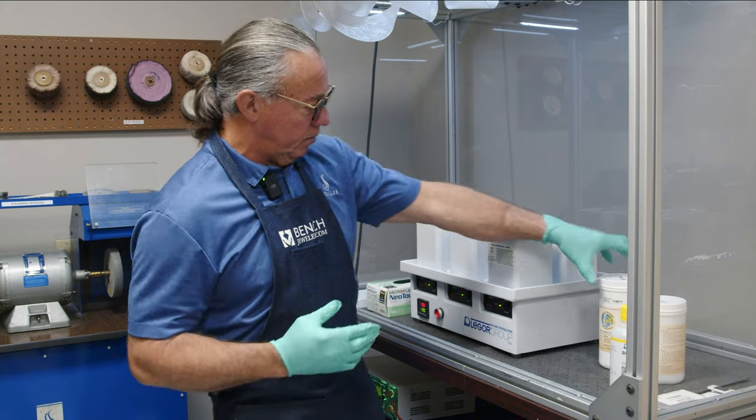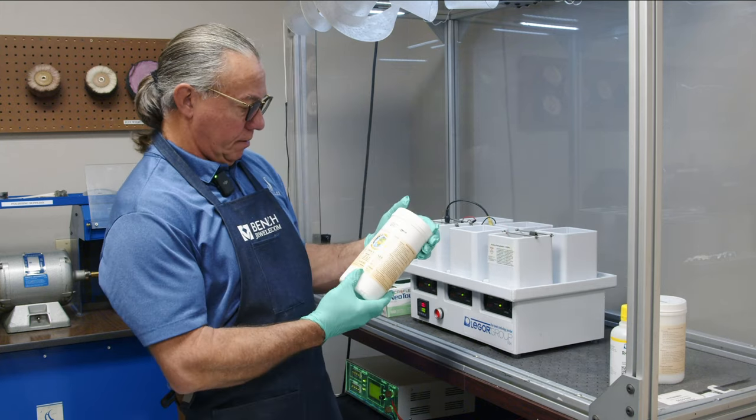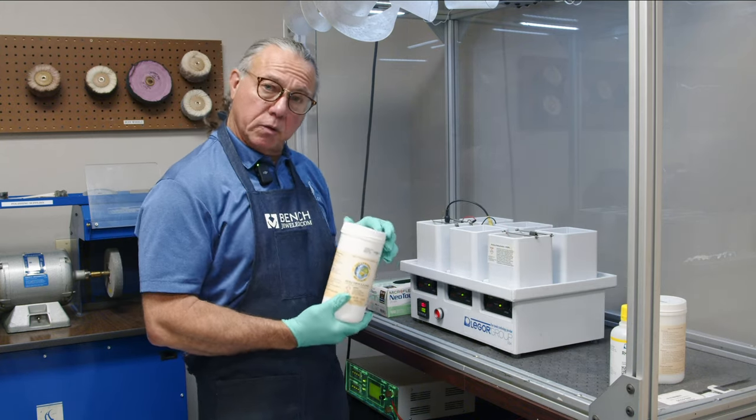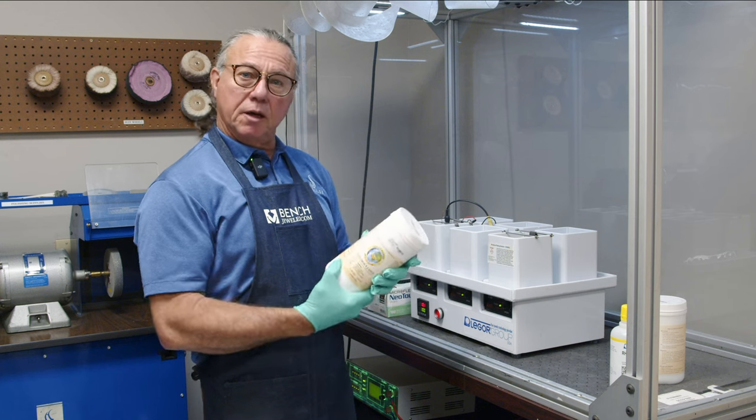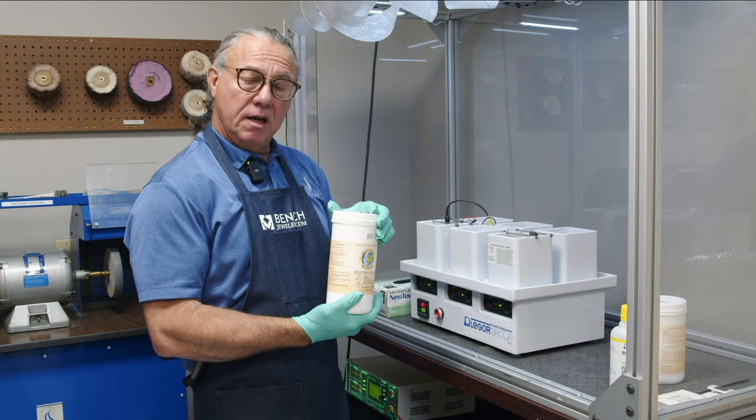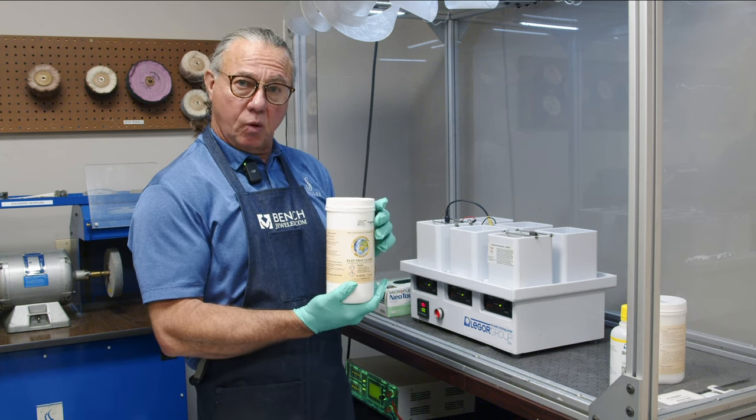To get started, we'll mix our Clean Earth ElectroClean. You can pre-mix a one-gallon container. It takes a quarter cup to one gallon.